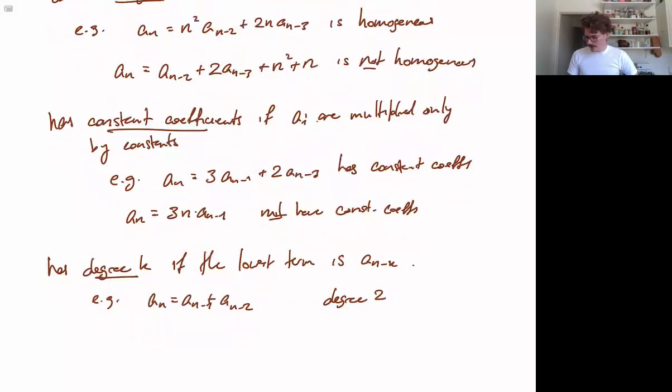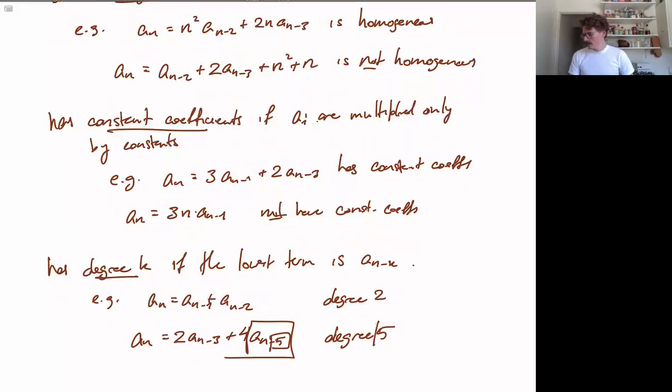And for another example, an equals 2 an minus 3 plus 4 an minus 5. This has degree 5. Because this is the lowest term, furthest back, appearing in the formula. And it's n minus 5. So in particular, it does not mean the number of terms here. It means the index of the lowest term.